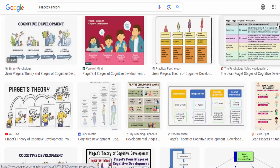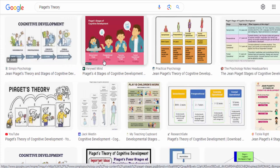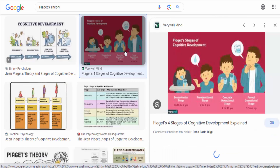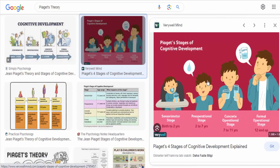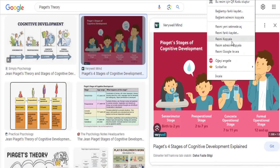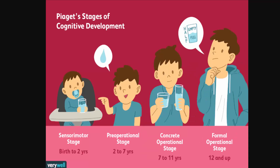Sensorimotor stage, birth to two years. During this stage, infants and toddlers learn about the world through their senses and motor actions. They develop object permanence — the understanding that objects continue to exist even when they are out of sight.